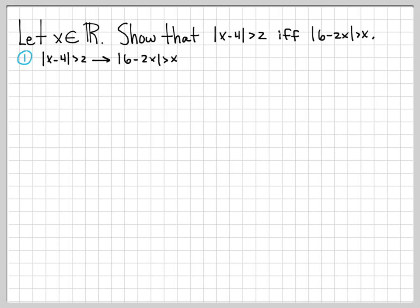For the first case, let's show that the absolute value of x minus 4 greater than 2 implies that the absolute value of 6 minus 2x is greater than x. We'll let the absolute value of x minus 4 be greater than 2 as our assumption, and deduce that the absolute value of 6 minus 2x must be greater than x. Working with the absolute value sign is the key trick here, and we break it into cases covering x minus 4 being positive and negative.